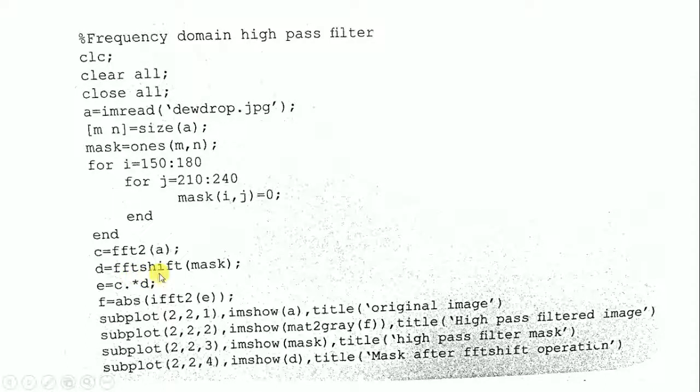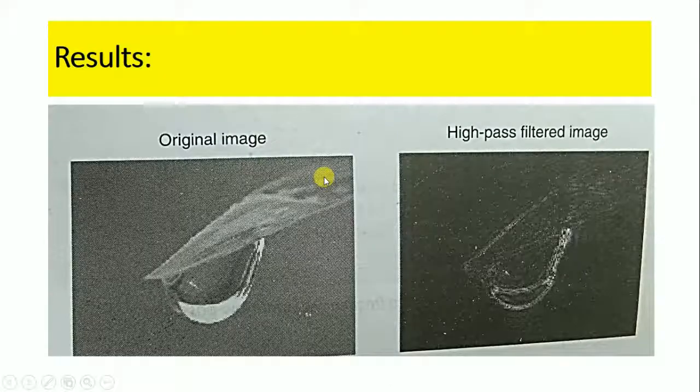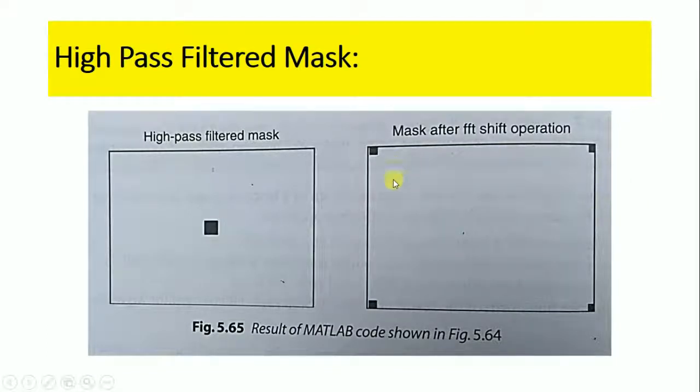After defining the mask, we compute C equal to the 2D fast Fourier transform of image A. Then we apply the FFT shift to the mask D. After the FFT shift operation, the high pass filter mask changes its shape accordingly. We then multiply C and D element by element using E equal to C dot-star D.